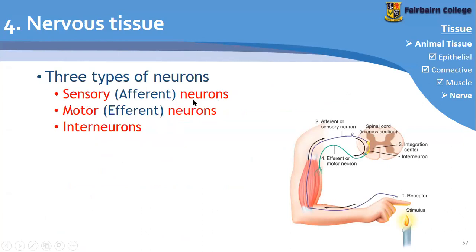Sensory neurons are what your body uses to sense things. For example, putting your hand on a hot stove — sensory neurons will send that signal to the brain. Motor neurons is what your brain then sends back to your arm to lift it up. So sensory neurons sense; motor neurons bring about some sort of action.